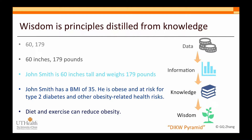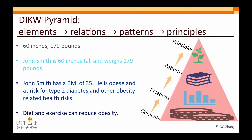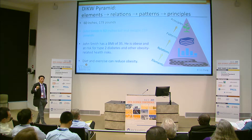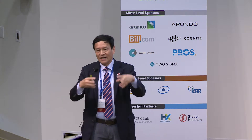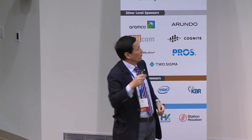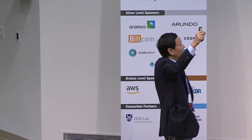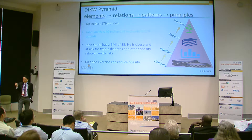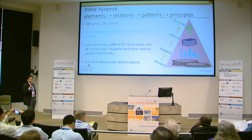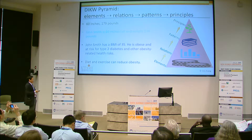Data science is about this process of driving from very concrete pieces of data to relationships among data, and then at a higher level, patterns from those relations. Each level we progress, we connect more things at a higher level. The relation becomes a single dot in your next level of patterns. This involves levels of abstraction — very much the computer science way of thinking.